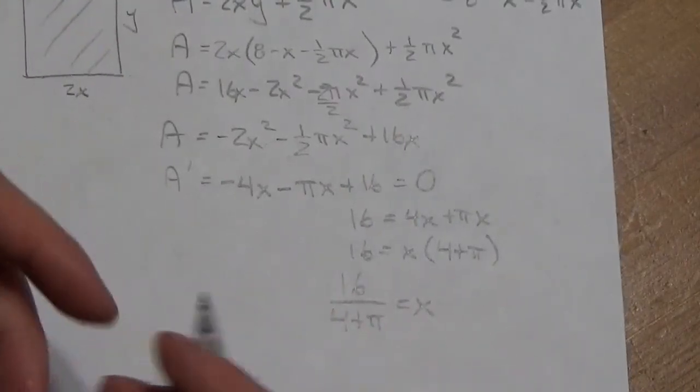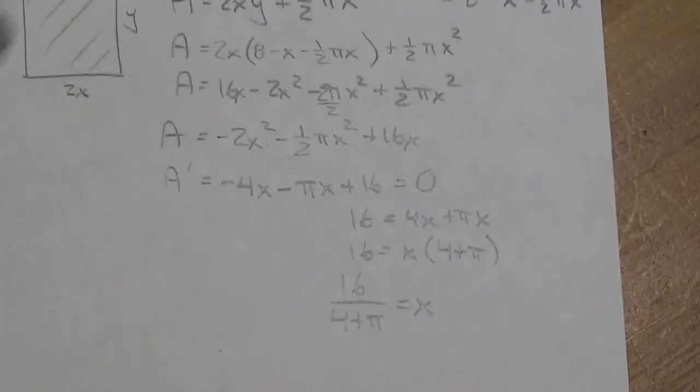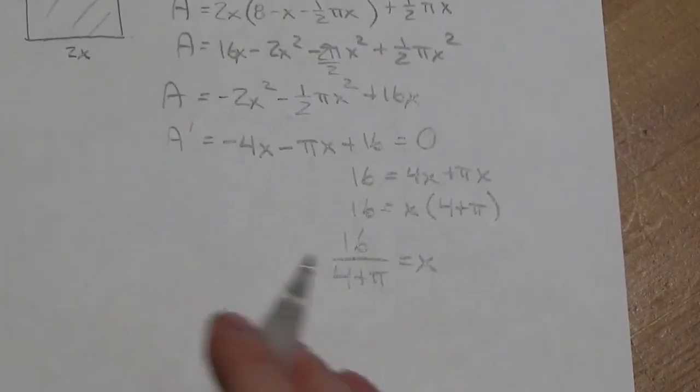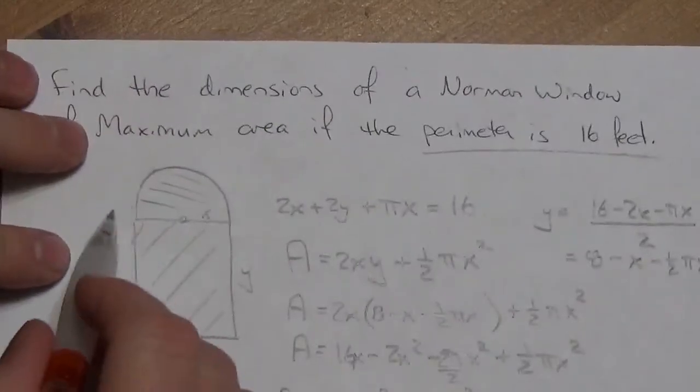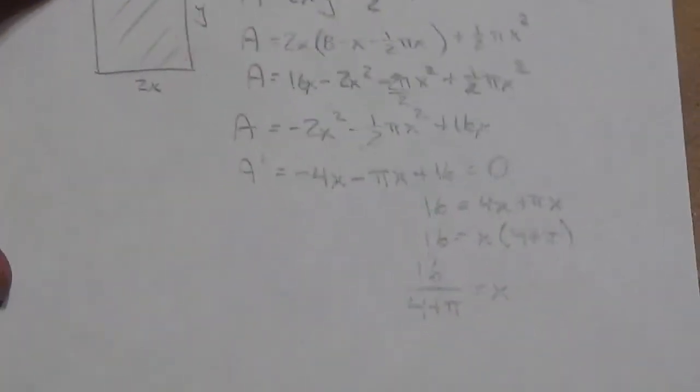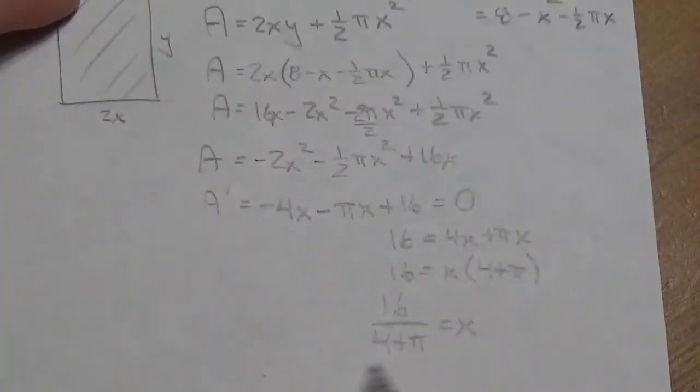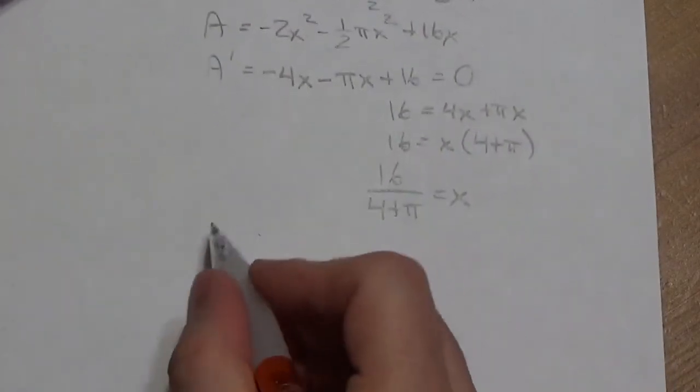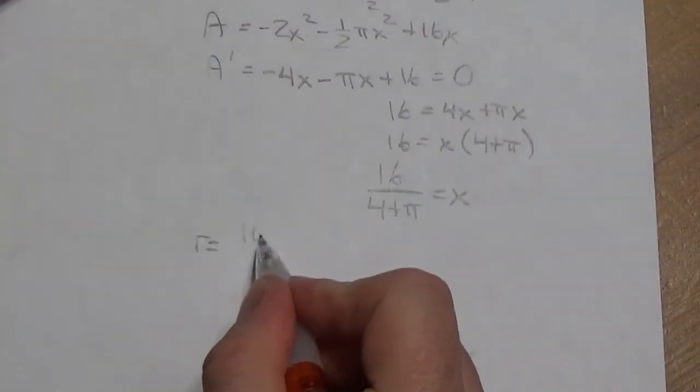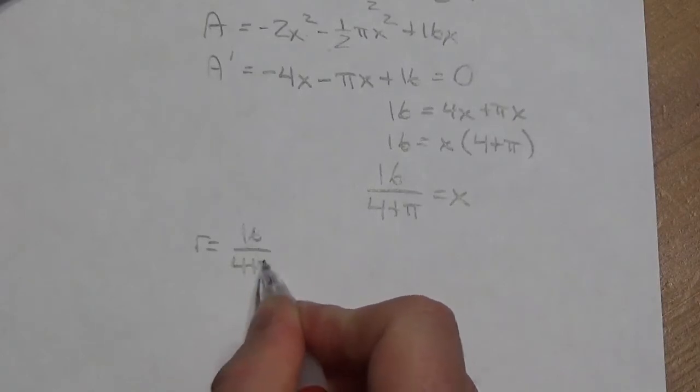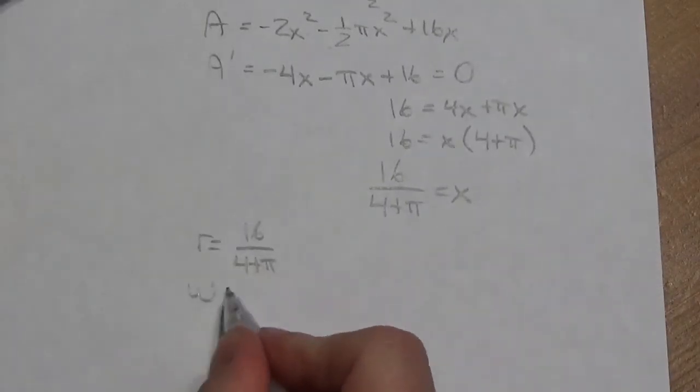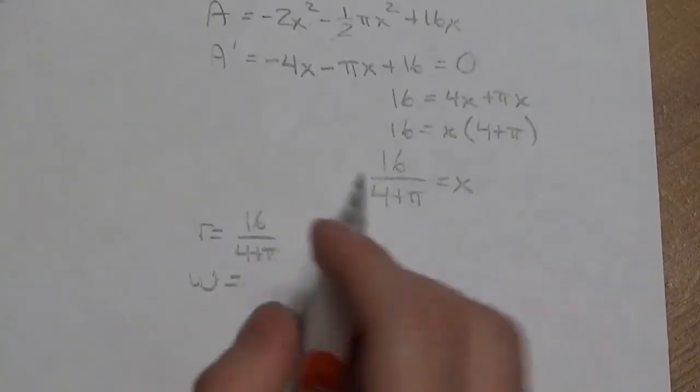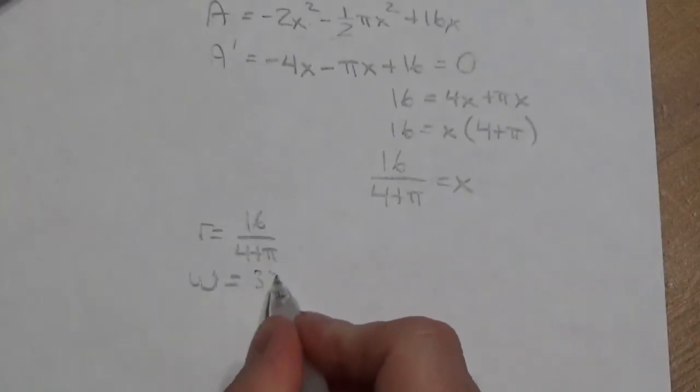Okay? So, if you will, that's going to be the radius of the circular part of this. The width. Okay? So, let's think of it like this. We'll put things together. So, my radius is going to be 16 over 4 plus π. The width of the rectangular portion is going to be twice that. So, it will be 32 over 4 plus π.